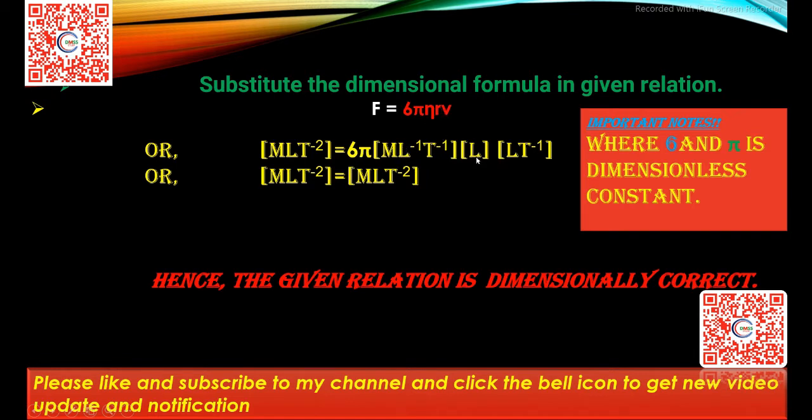Substituting the dimensional formulas: [MLT⁻²] = [ML⁻¹T⁻¹][L][LT⁻¹]. Multiplying: base remains same and powers add. For L: -1+1+1 = 1, for T: -1-1 = -2. This gives [MLT⁻²] = [MLT⁻²]. Hence, the equation is dimensionally correct.